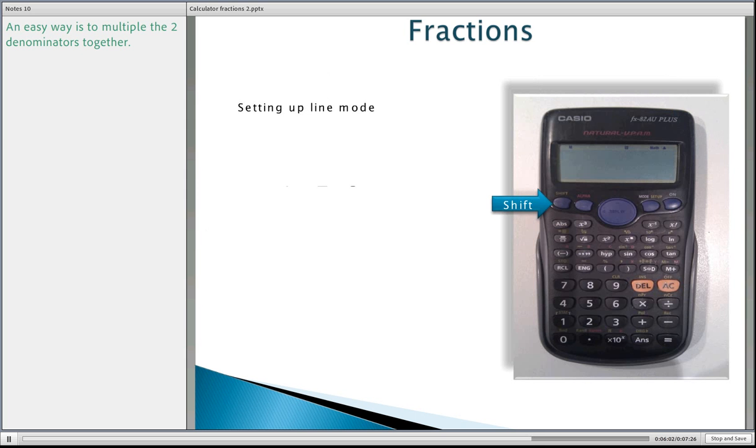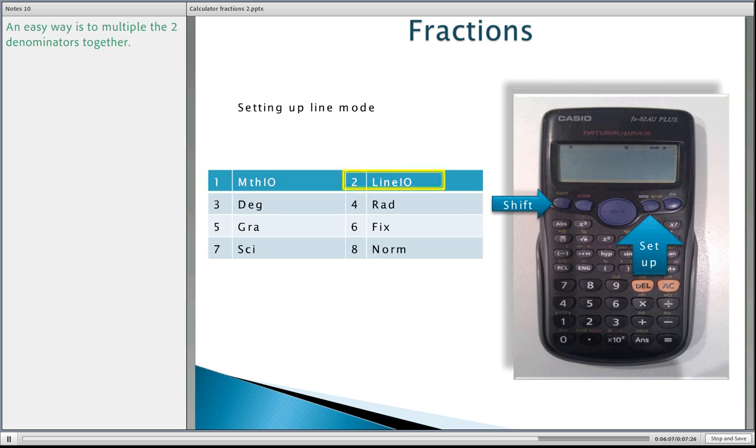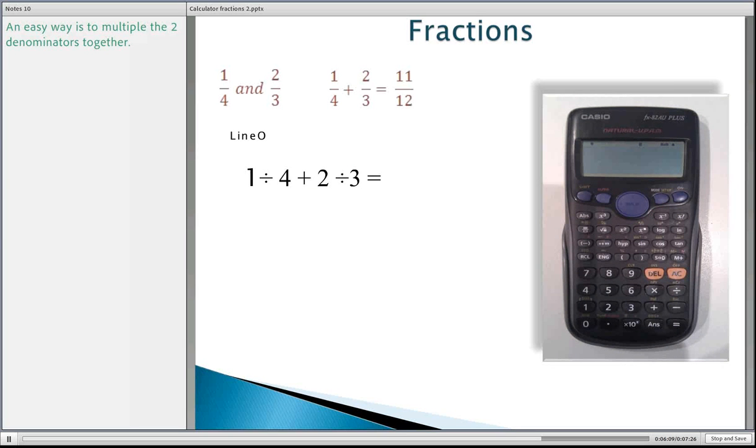Now if we set up into the line mode, we go back to shift set up. We click on the two. It's now going to be put on your calculator in a line. So if you still got the math mode there, you haven't actually turned it off. It needs to be blank there. So let's just go through it now. It is one. Hit the fraction button there on your calculator. Four. And this is what it should look like on your calculator if you've got it in that mode there.